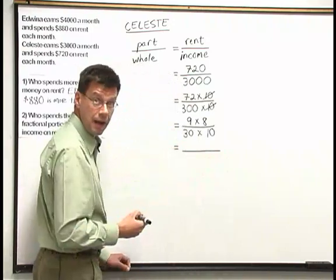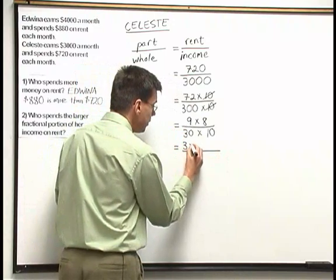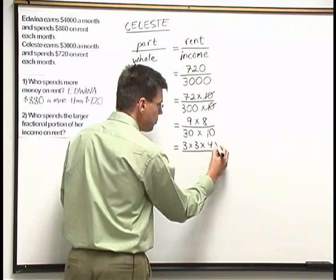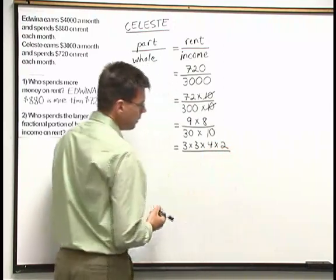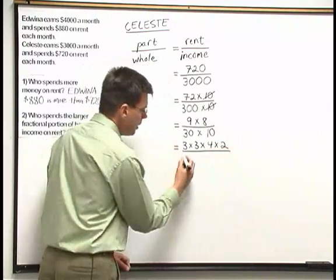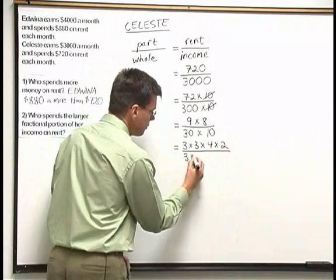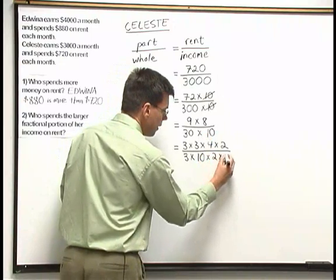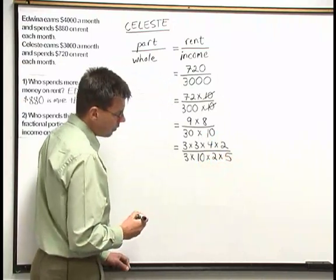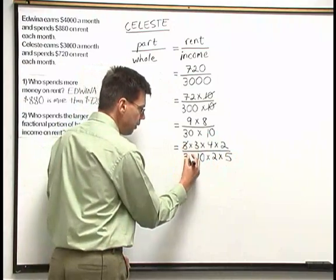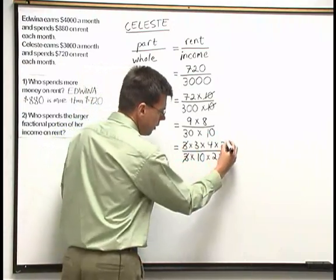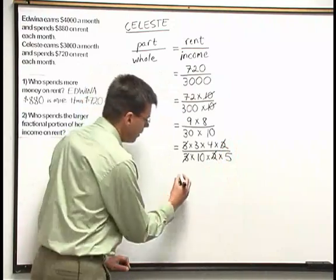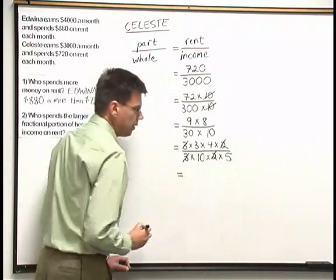Up above, 9 can be written as 3 times 3, and 8 as 4 times 2. Down below, 30 is 3 times 10, and I'll break that remaining 10 down as 2 times 5. Now I do see a 3 above and below, and a 2 above and below that I can cancel at this stage. And there may be more canceling to do.